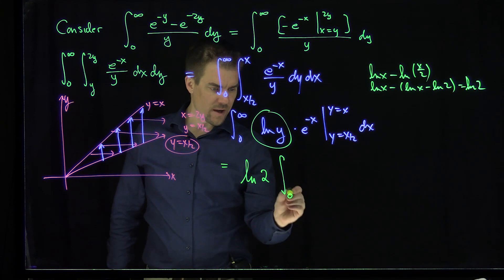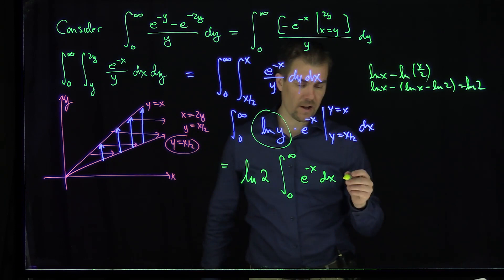So what we're going to have is ln(2) from this expression. I'm going to have ln(2) times the integral from 0 to infinity of e^(-x) dx, which we can compute. It's a very common value.